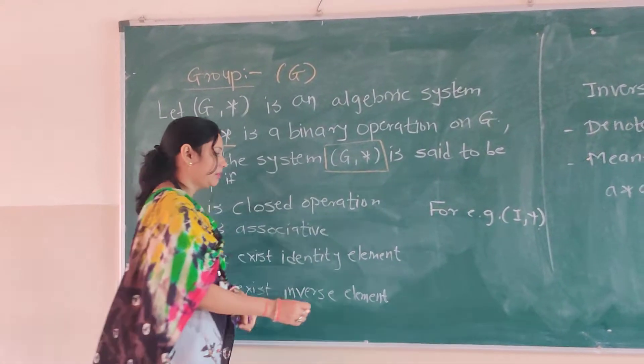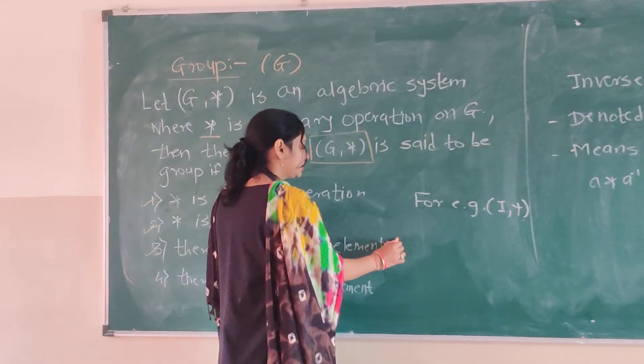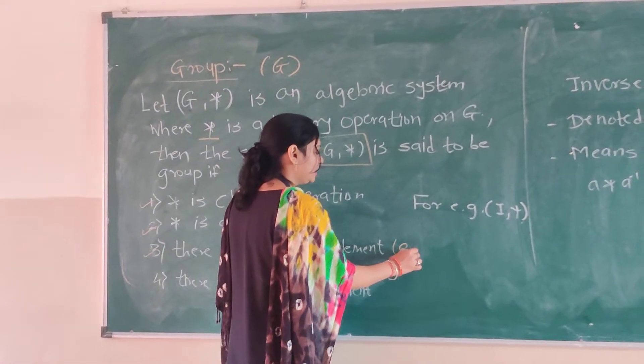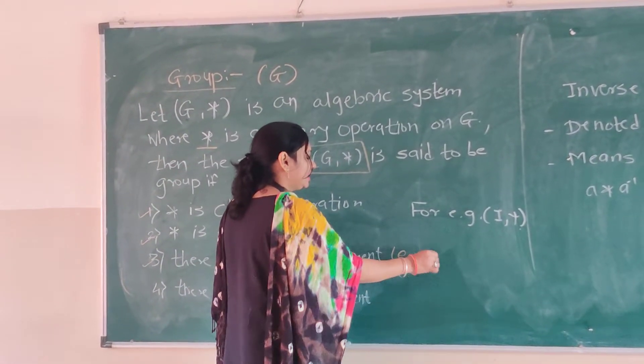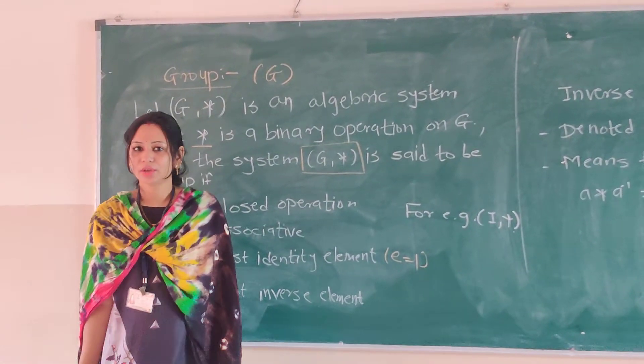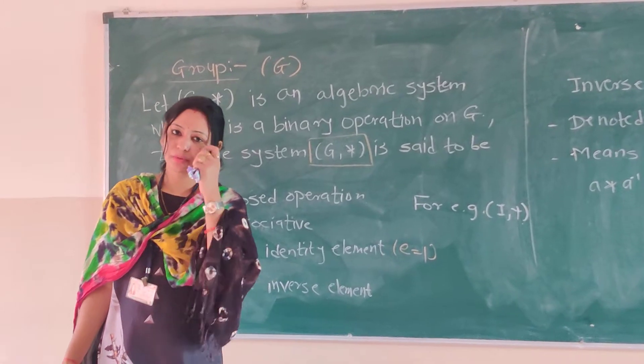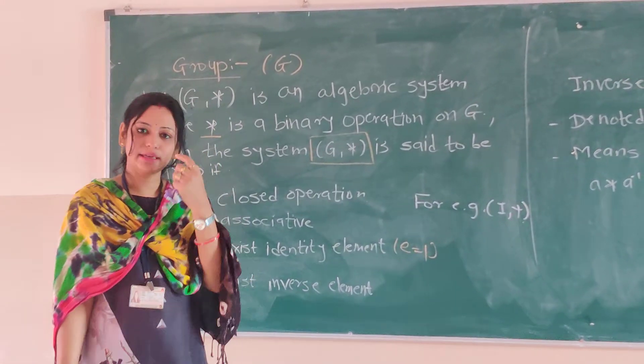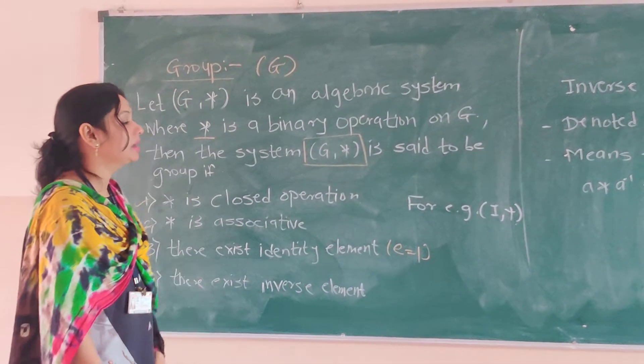There is an identity element. The identity element is denoted by E, and it is nothing but 1 — so 1 should be present. That is the identity element.